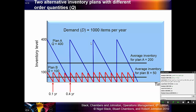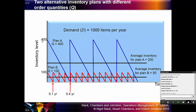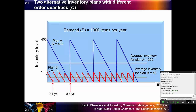How many times do we order in Plan A? The number of orders equals the demand divided by Q. So 1,000 divided by 400 equals 2.5, meaning we order two and a half times — or three times, where the last order is for half the quantity. In Plan B, 1,000 divided by 100 equals 10 times.